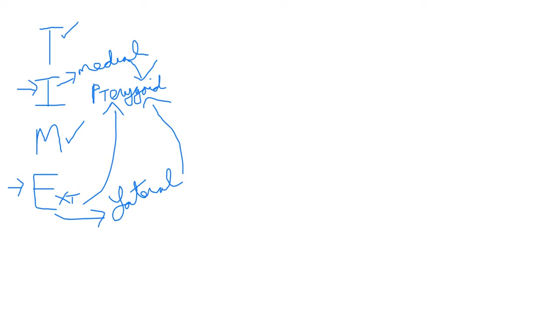Those are the muscles of chewing — temporalis, internal pterygoid (also known as medial pterygoid), masseter, and external pterygoid (also known as lateral pterygoid).